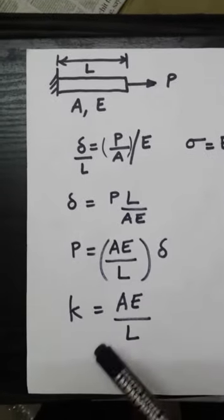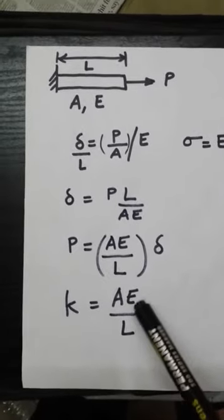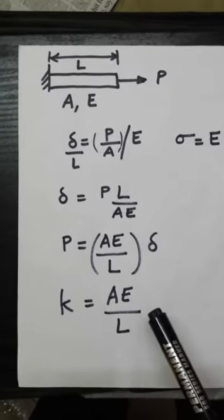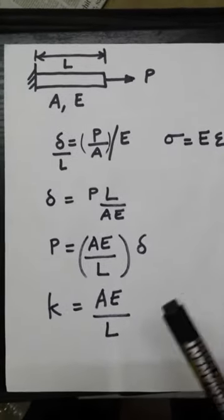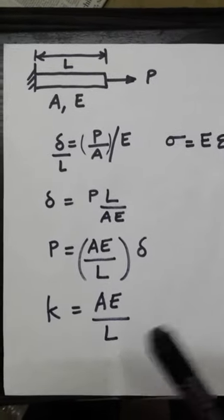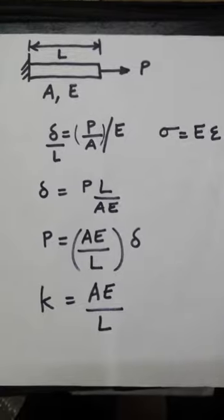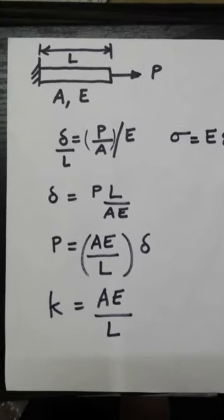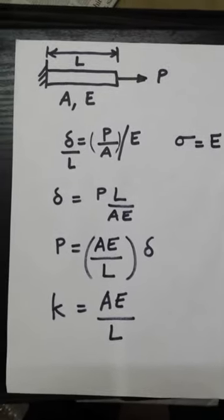So the stiffness of the bar will be AE divided by L, not L divided by E. Friends, please take this into account and neglect that particular portion from lecture one. Sorry for the error once again, and thank you.